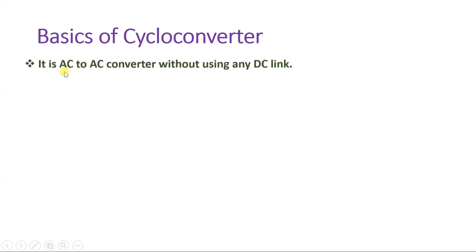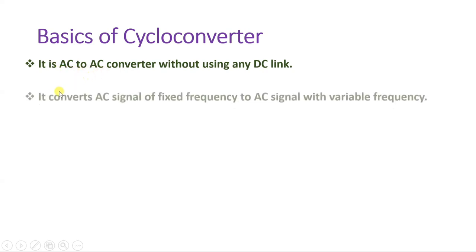Let us begin with basics of cycloconverter. A cycloconverter is an AC to AC converter — we don't use any DC link. We convert an AC signal into an AC signal without using any DC link. Our agenda is to convert frequency; 'cyclo' means frequency. So in a cycloconverter, we change one frequency into another frequency without using any DC link.